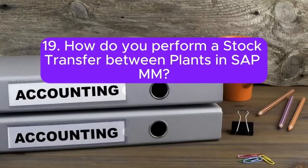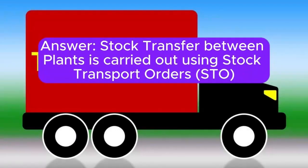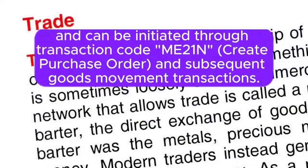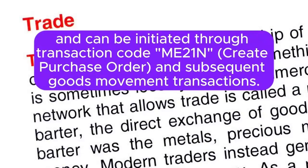Question 19: How do you perform a stock transfer between plants in SAP MM? Answer: Stock transfer between plants is carried out using Stock Transport Orders (STO), and can be initiated through transaction code ME21N (Create Purchase Order) and subsequent goods movement transactions.